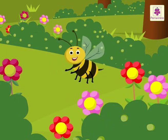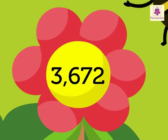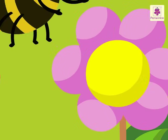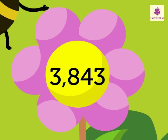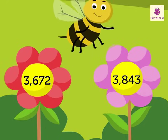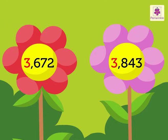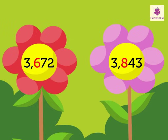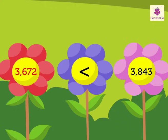Let us understand with an example. Look at the numbers 3672 and 3843 on the flowers. We begin by comparing the digits in the thousands place, that is 3 and 3. The digits are the same here. So now we compare the digits in the hundreds place, that is 6 and 8. The digits are different here. 6 is smaller than 8. So the number 3672 is smaller than the number 3843.